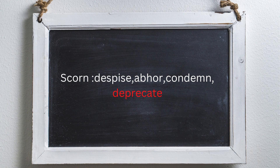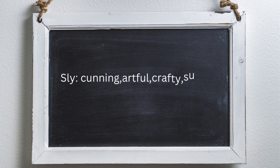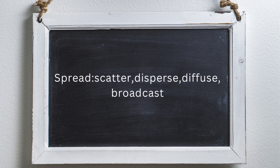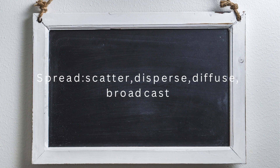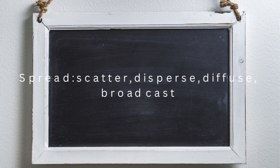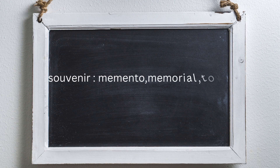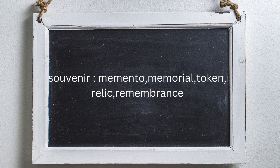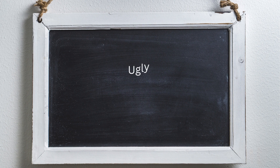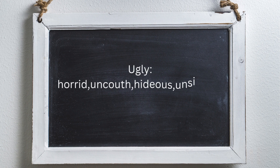Scorn: despise, abhor, condemn, deprecate. Sly: cunning, artful, crafty, and subtle. Spread: scatter, disperse, diffuse, broadcast. Souvenir: memento, memorial, token, relic, remembrance. Ugly: horrid, unsightly, repulsive, hideous.